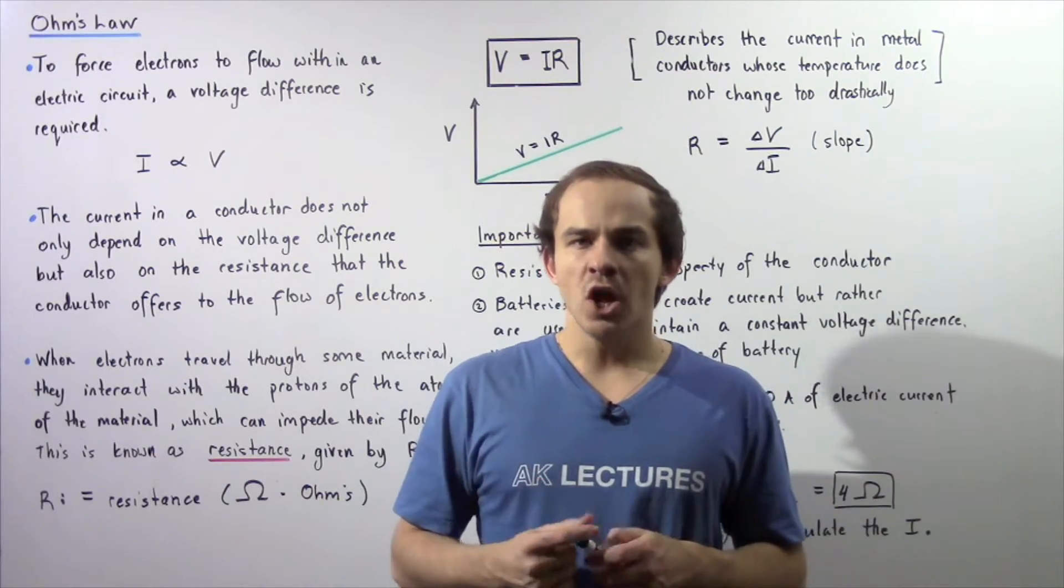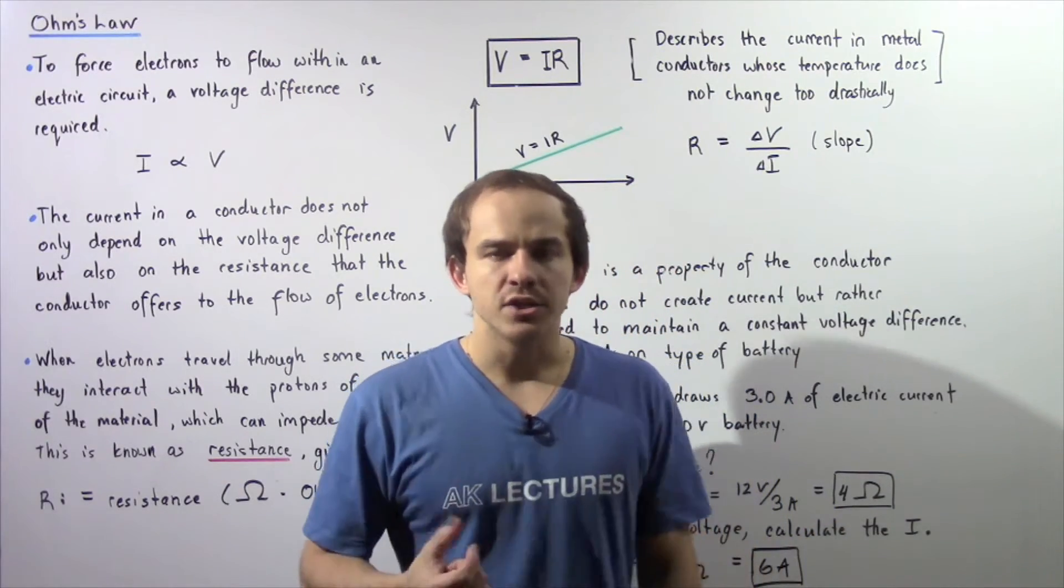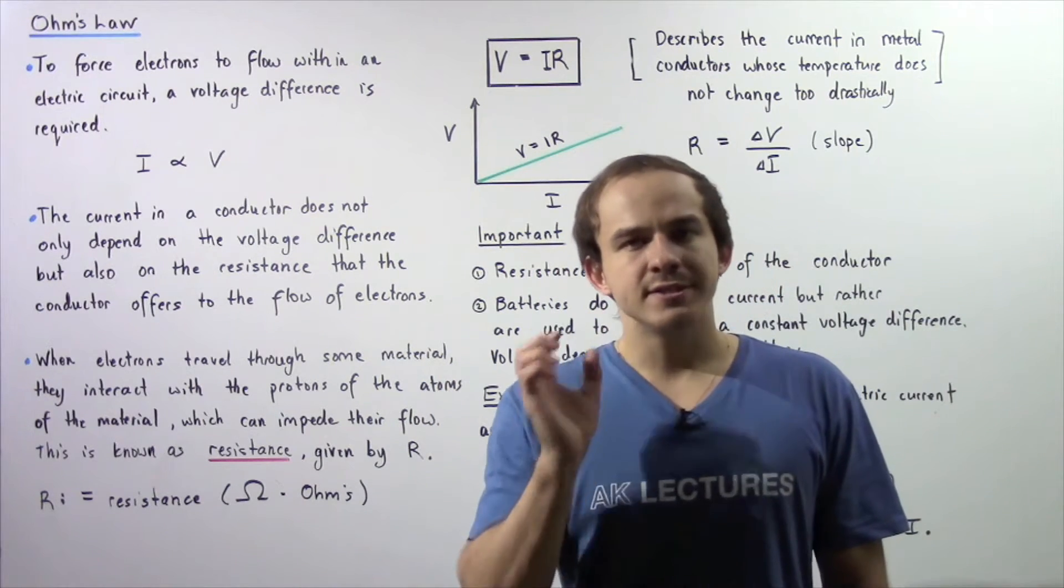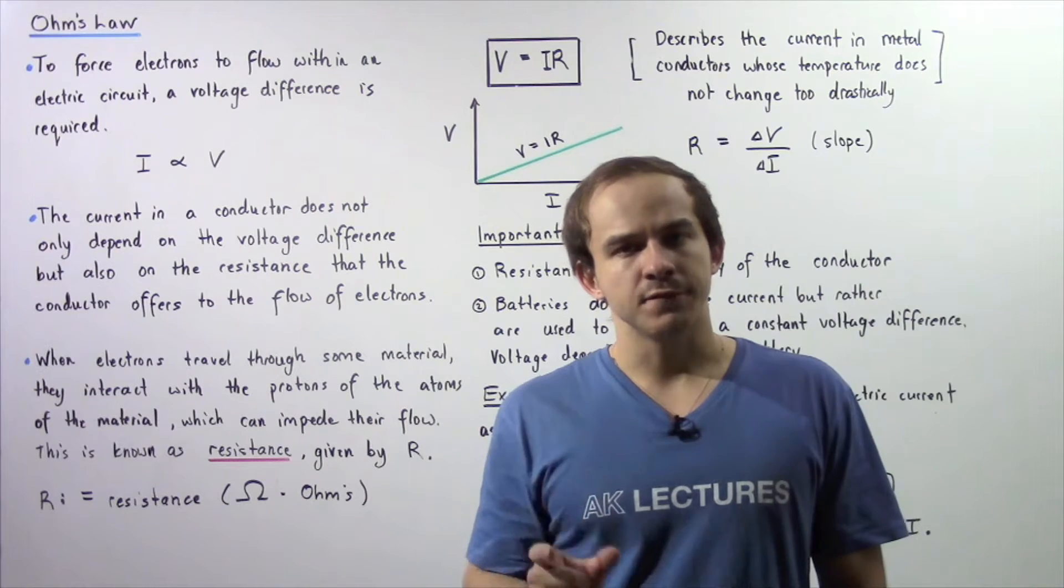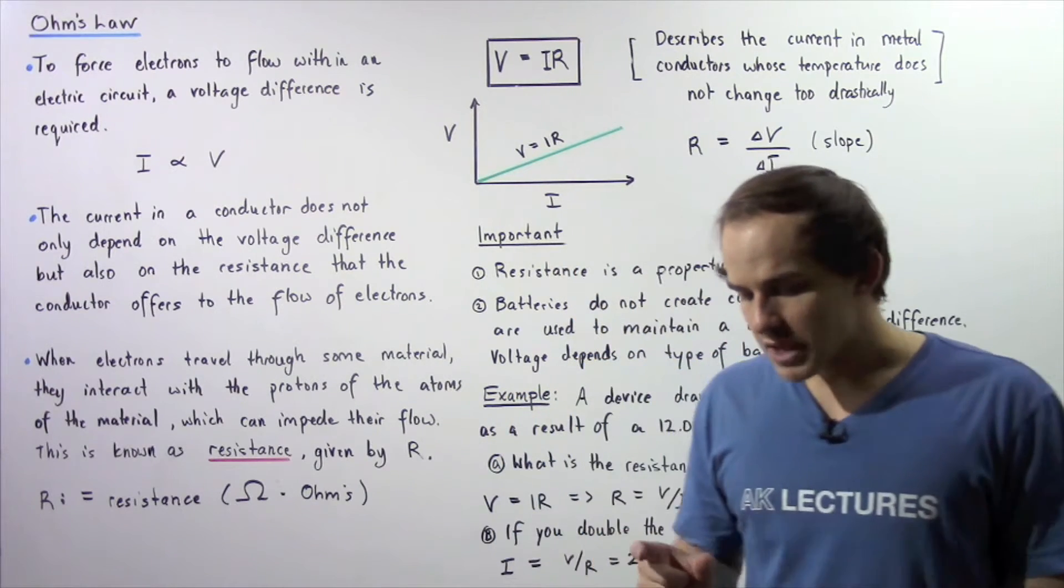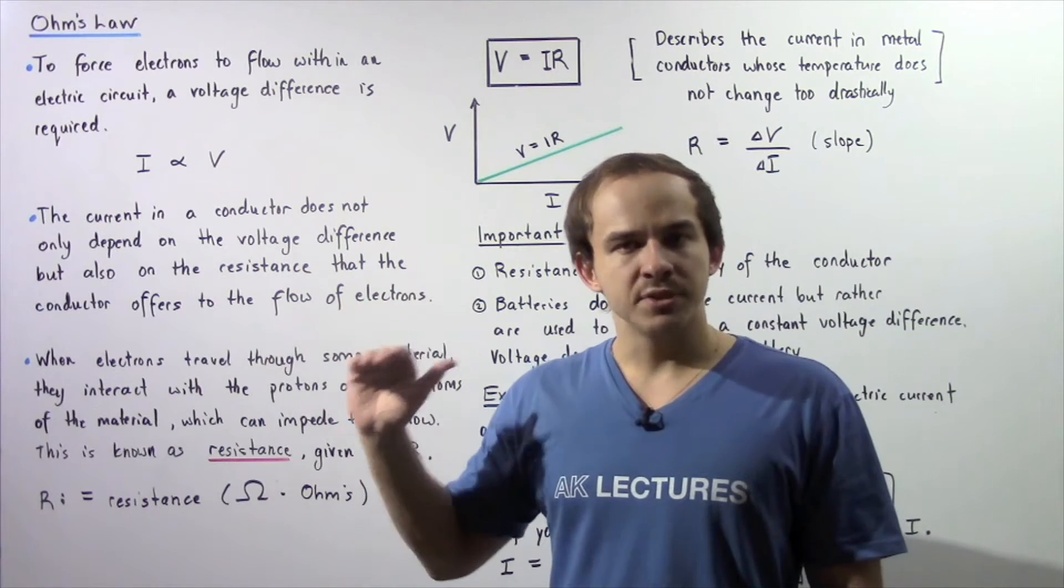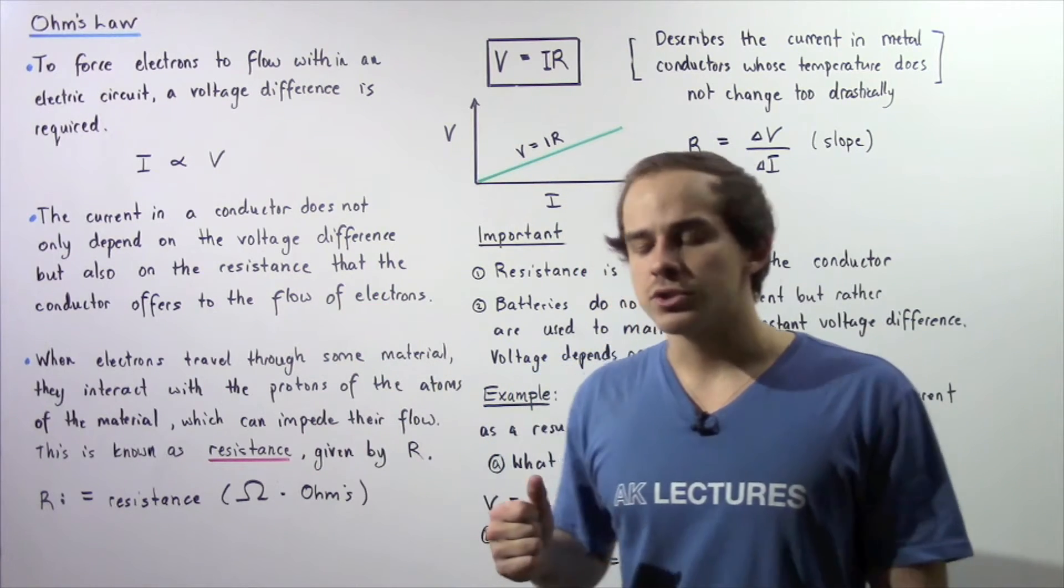In our discussion on electron flow, we said that electrons will only flow within an electric circuit if there exists an electric potential difference within that closed electric circuit.